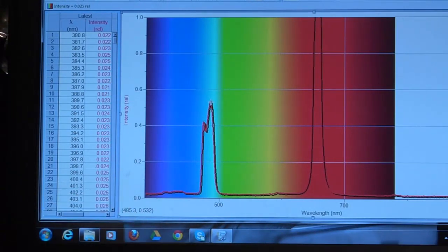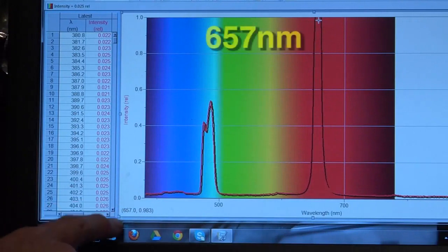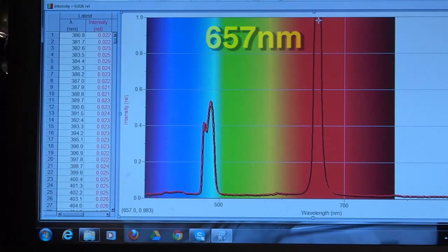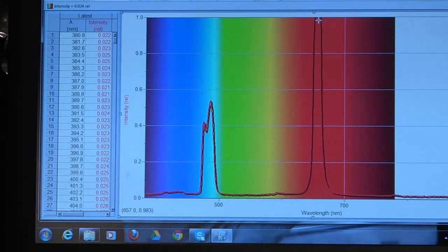So that's the wavelength. If we move over here to this peak, it's 657 nanometers. So those three in the visible are characteristic of hydrogen. No other element is going to give you that same three wavelengths.